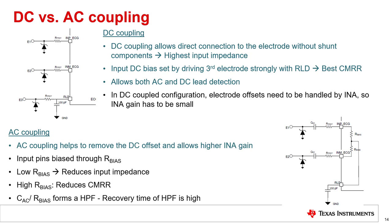The AC coupled configuration helps to block the DC offset, thereby allowing a higher gain setting in the instrumentation amplifier. However, the ECG input pins need to be biased through a resistor marked as R bias. A low value of R bias results in a reduced input impedance; on the other hand, a high value of R bias results in weaker RLD drive and therefore poor common mode rejection ratio. Also, the combination of the AC coupling capacitor CAC and the bias resistor R bias forms a high-pass filter. In order to pass the ECG signal band, the corner of this high-pass filter needs to be set to a low value in the range of 0.05 Hz or 0.5 Hz. However, such a low corner results in a large time constant for the filter, which can cause the initial signal acquisition to take a long time. Also, any change in the DC offset can result in a slow recovery.